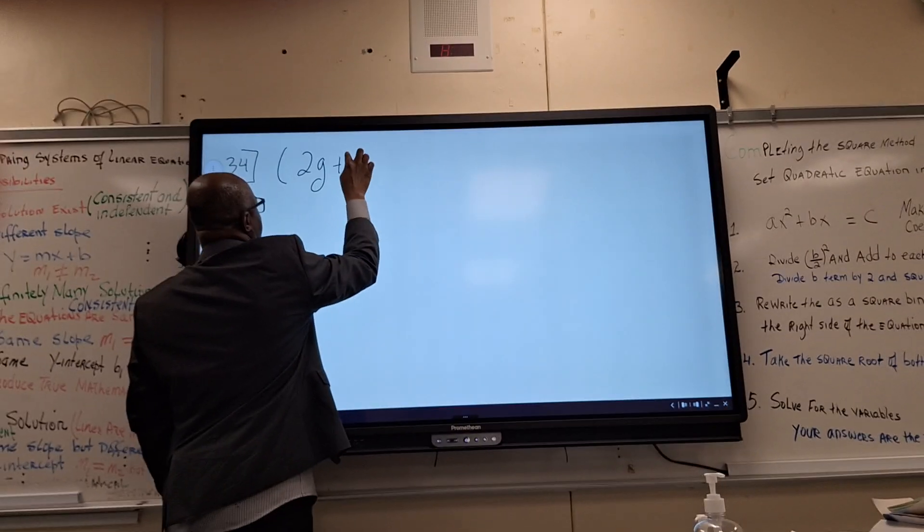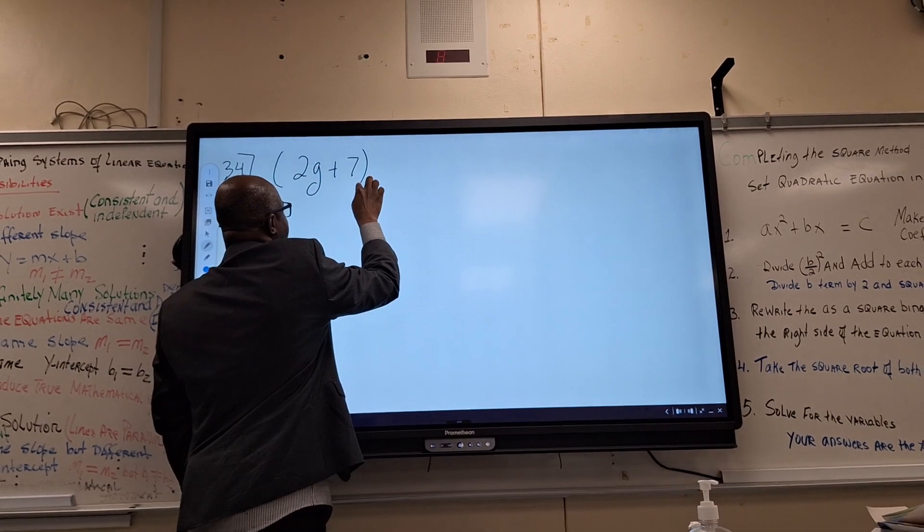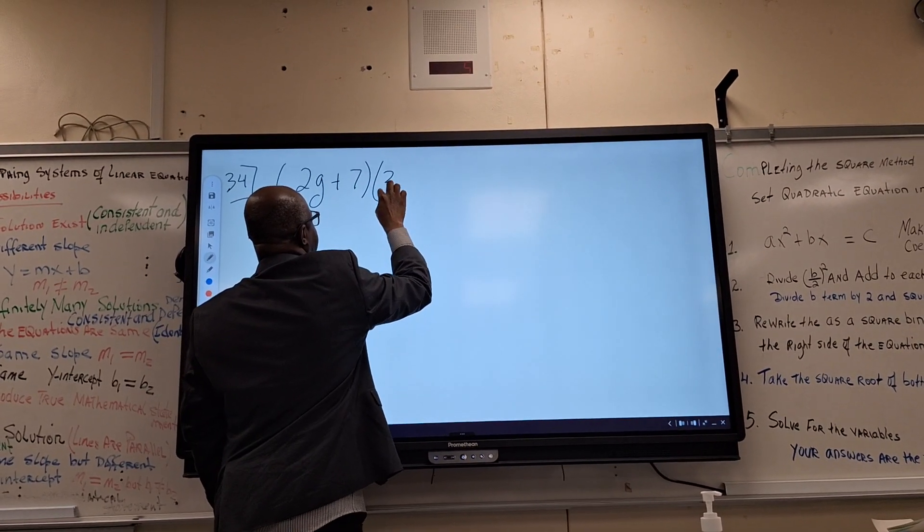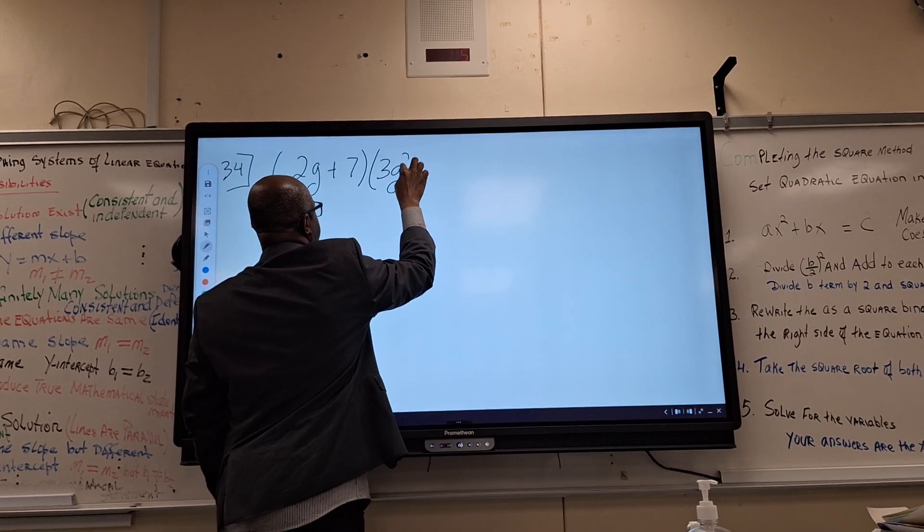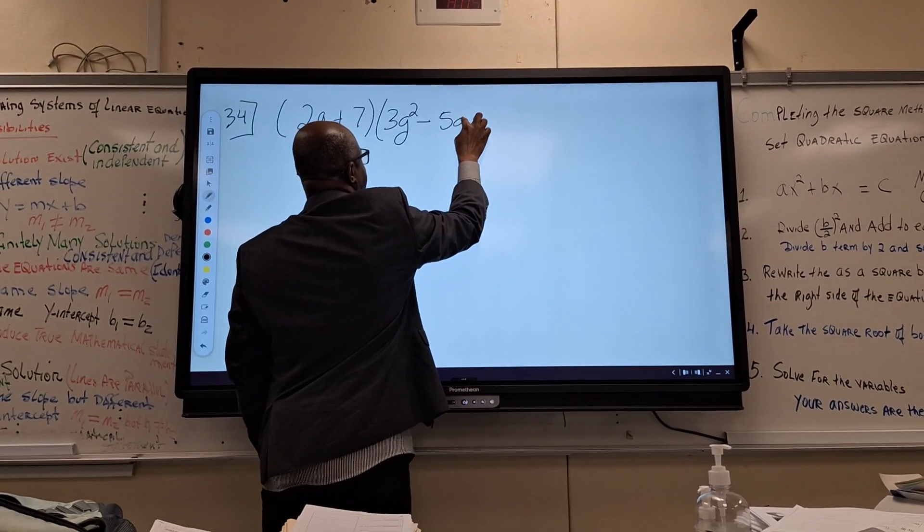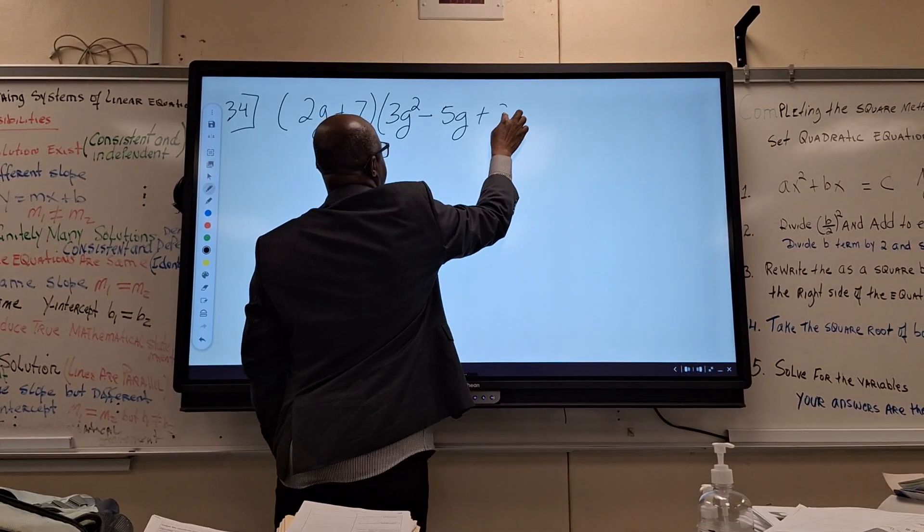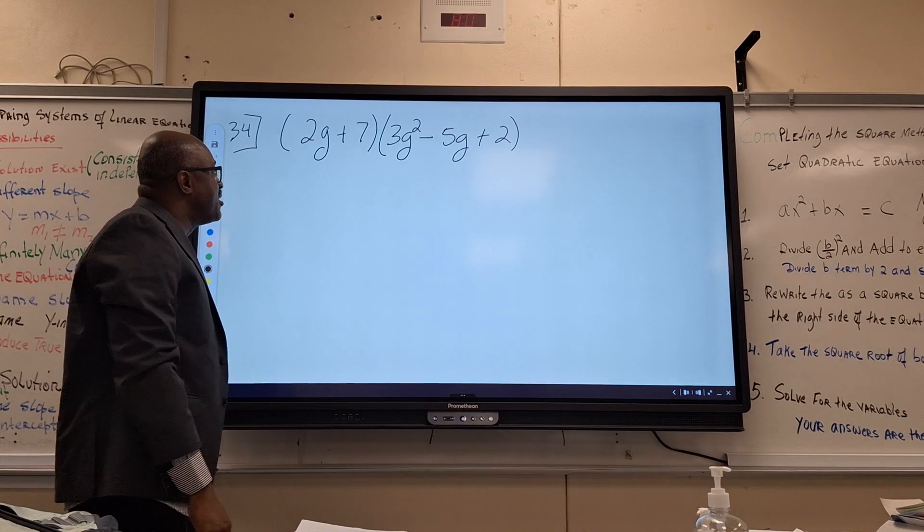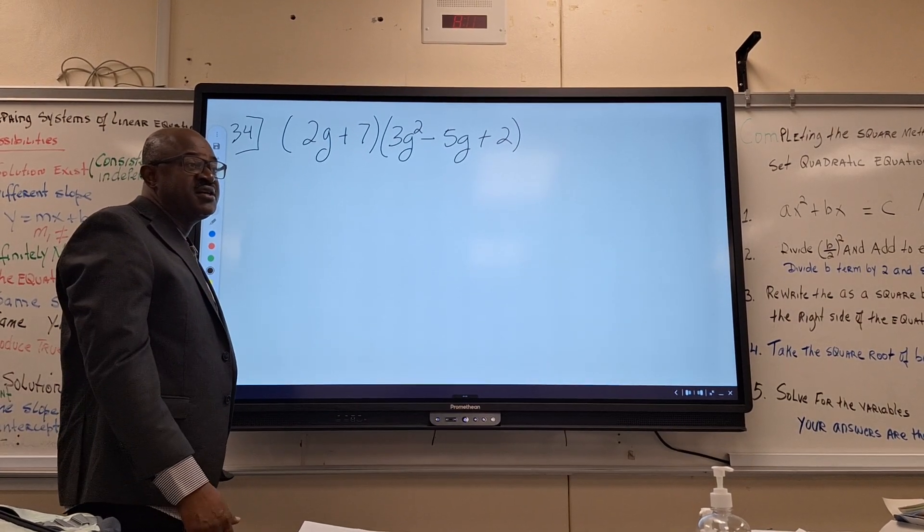2G plus 7, times 3G squared minus 5G plus 2. So nothing else, technically they are the same quality. Only the variable and the number changes.